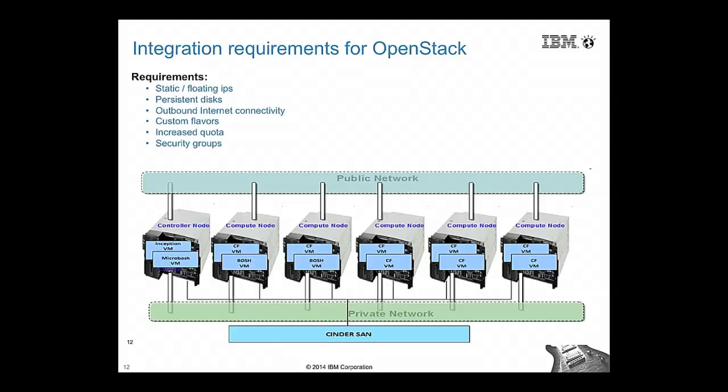A vanilla install of OpenStack is not sufficient — we need to customize it and ensure Cloud Foundry prerequisites are set up. We needed static and floating IPs enabled, persistent disks, and outbound internet connectivity for the VMs. Custom flavors need to be created for different Cloud Foundry components such as routers and DEAs. We also need specialized security groups to handle Cloud Foundry traffic, ensuring connectivity to the router from outside and allowing VMs within Cloud Foundry to communicate with each other.